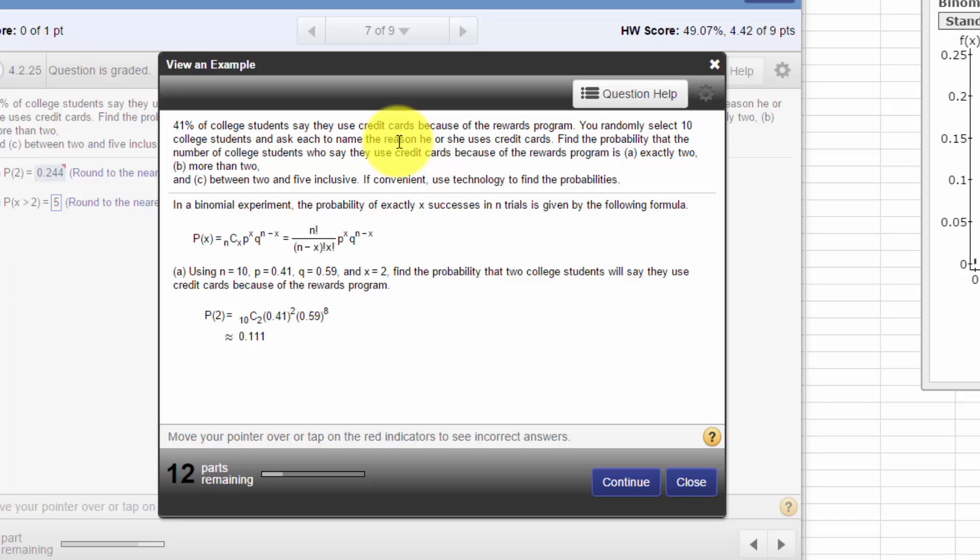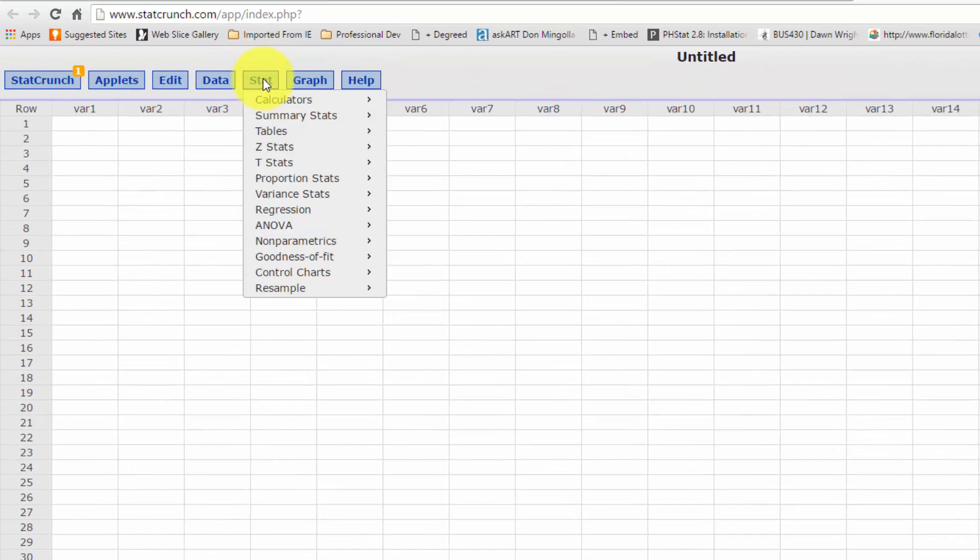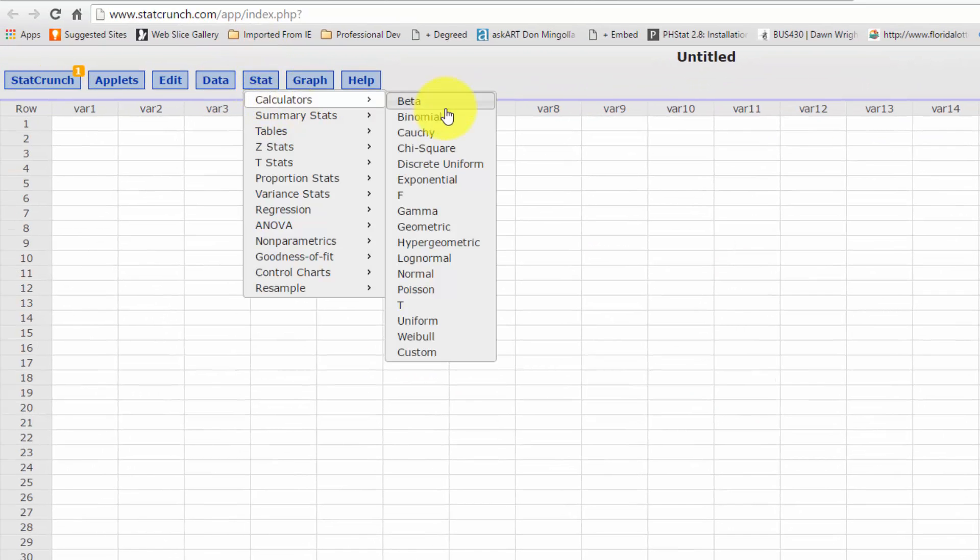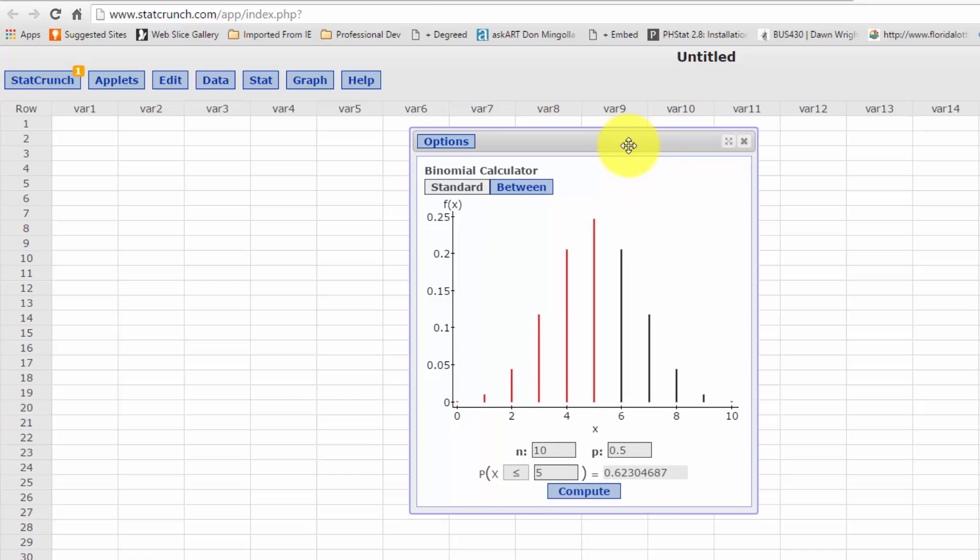So let's go to StatCrunch. I'm going to bring up the calculator and go to—there it is—binomial calculator. It pops up. I've got some old data in here. Let me recall.